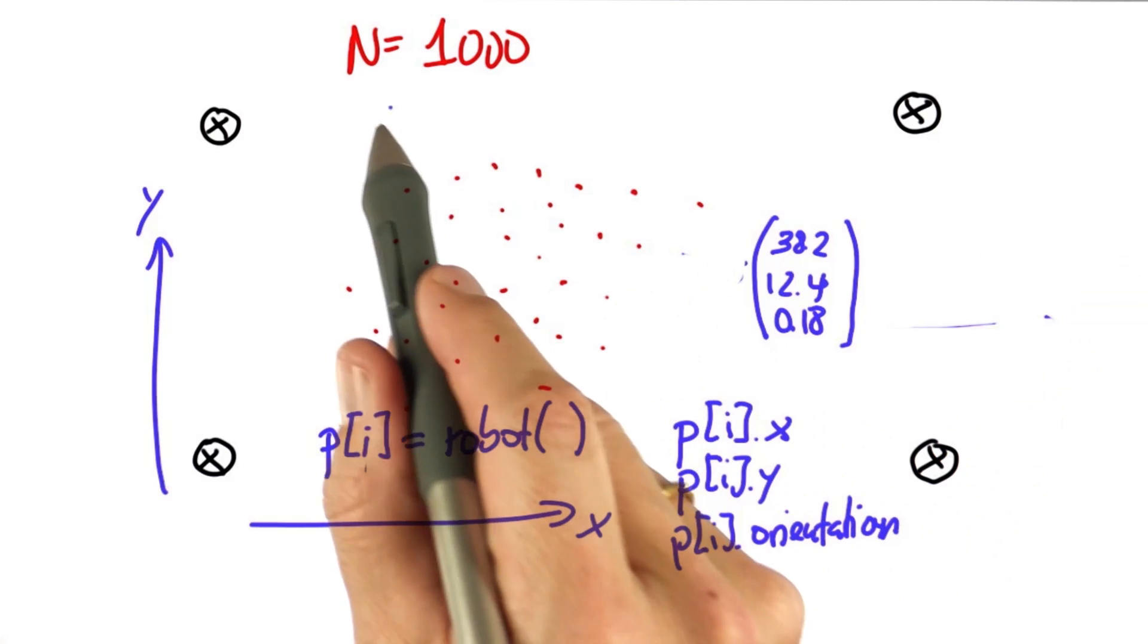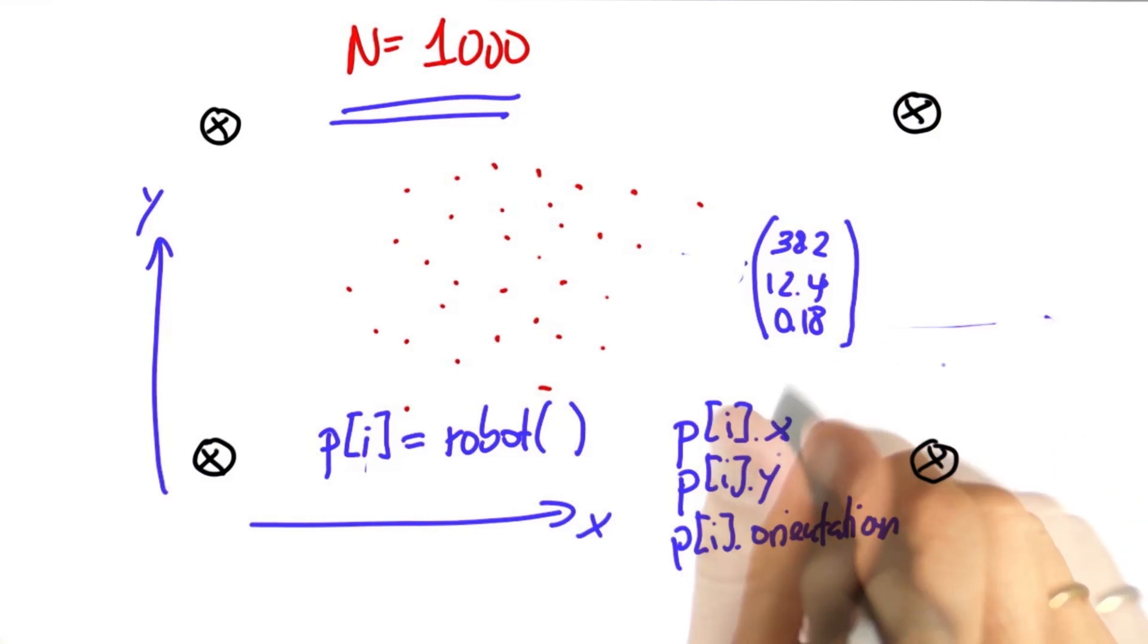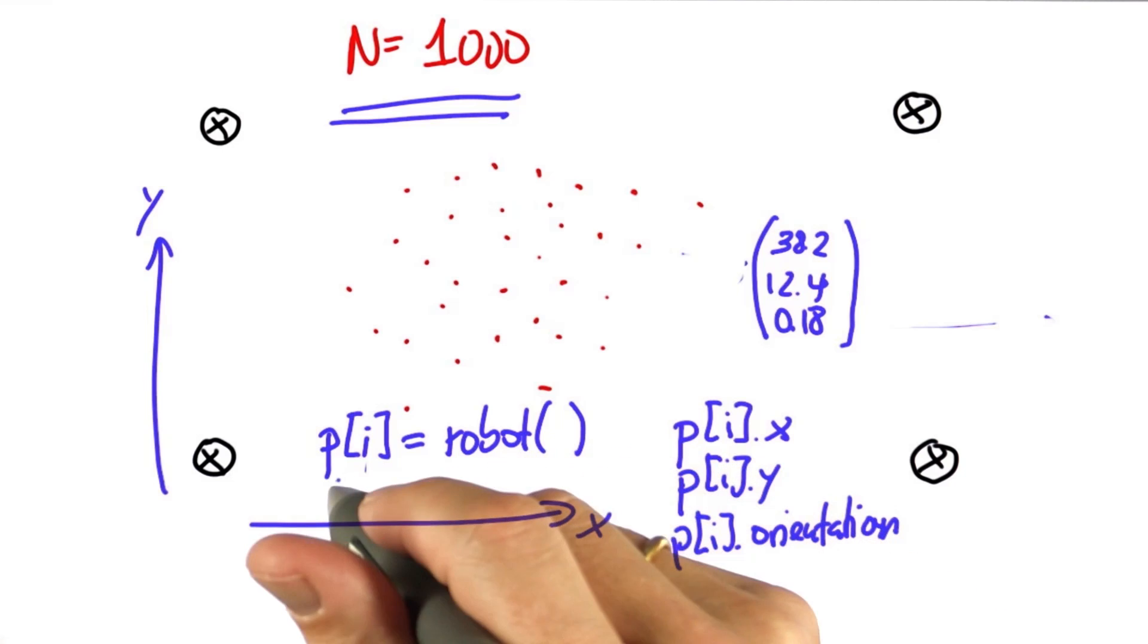So to make a particle set of 1,000 particles, what you have to program is a simple piece of code that assigns 1,000 of those to a list.